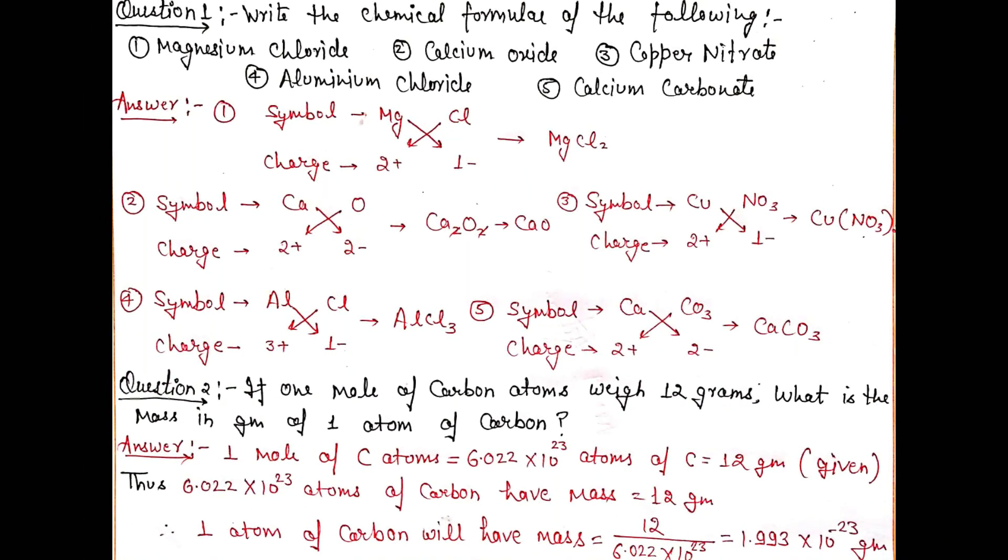Part 1: Magnesium chloride, calcium oxide, copper nitrate, aluminium chloride, and calcium carbonate. In my previous video, I taught you how to construct chemical formulas with the help of the valency cross method. The answers are given here, so you can note them down.